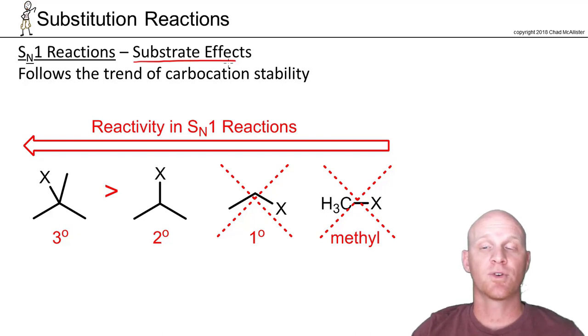We'll find that the trend is going to follow the same trend as carbocation stability. You might recall from the last chapter that tertiary carbocations are more stable than secondary, and secondary are more stable than primary, and primary carbocations are more stable than methyl carbocations. The more substituted carbocations, the more stable, and that's the trend in reactivity we see.